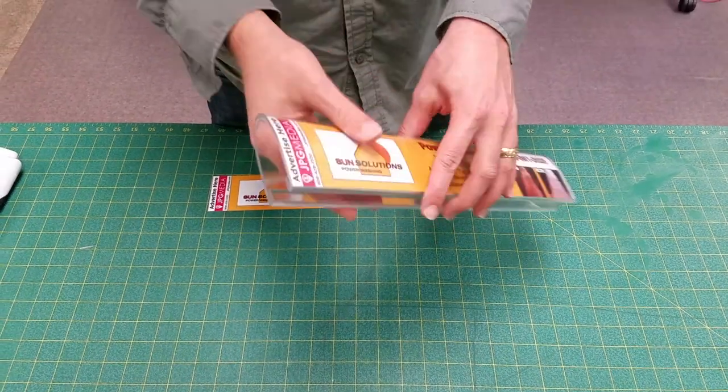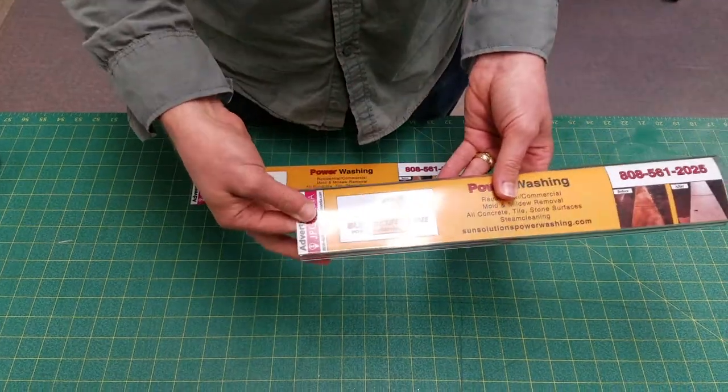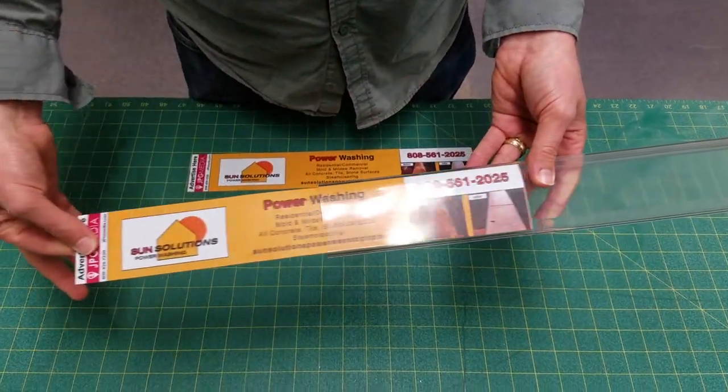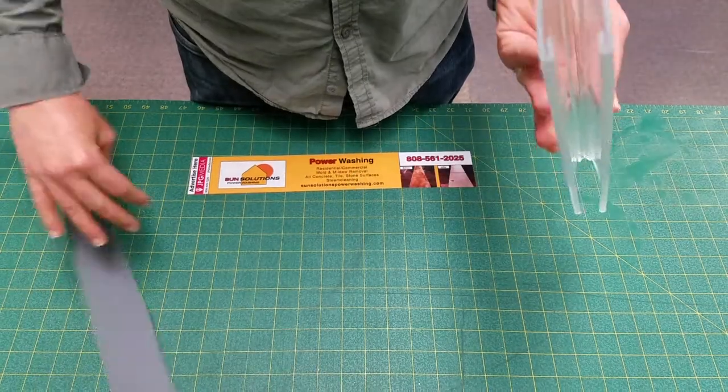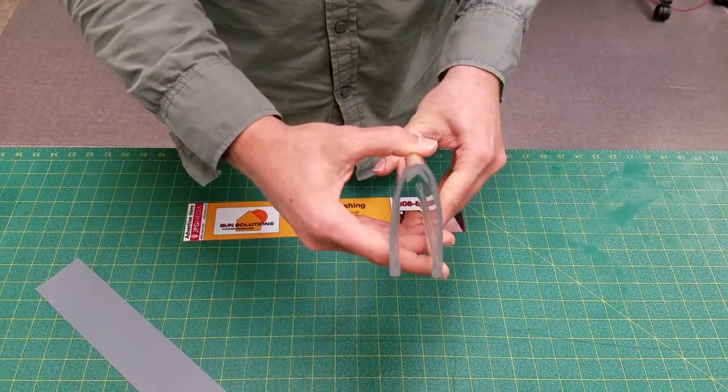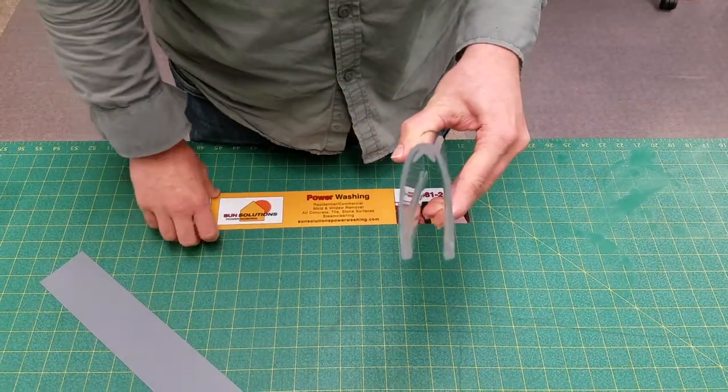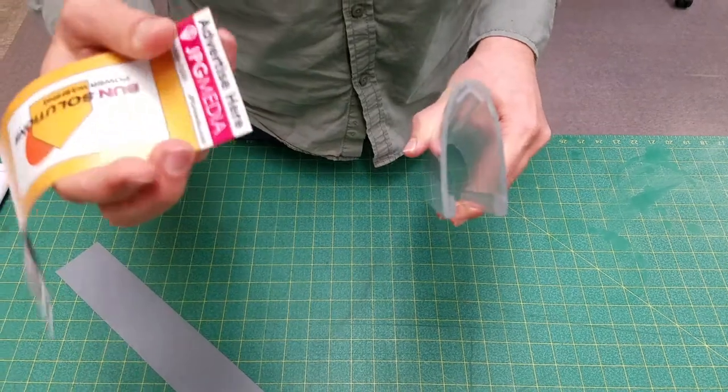I'm going to go ahead and pull the graphics out of one side. So now it's empty, you can see that there. Pretty easy to do.